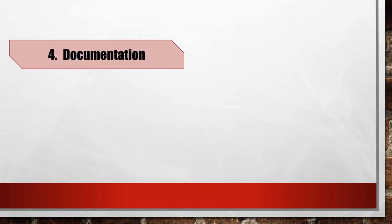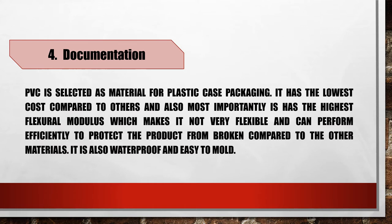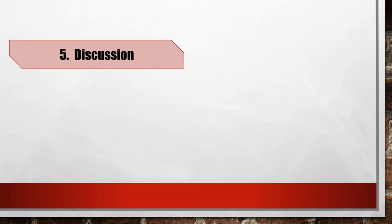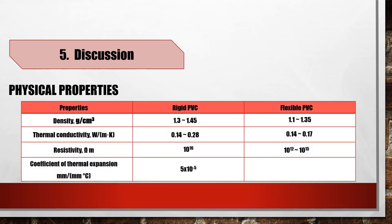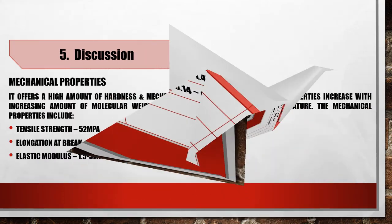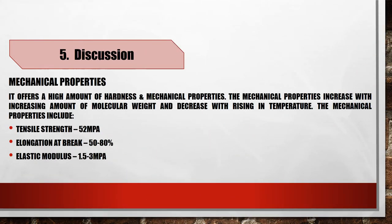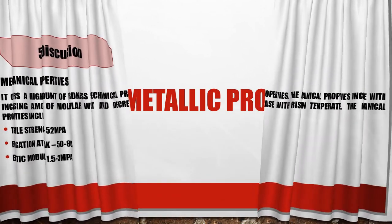Documentation process. Based on the ranking, PVC is selected as the material for plastic case packaging. It has the lowest cost compared to others and, most importantly, has the highest flexural modulus, which makes it not very flexible and can perform efficiently to protect the product from damage compared to other materials. It is also waterproof and easy to mold. We discussed the findings in material selection. PVC also has its own physical and mechanical properties which differ from other plastic materials.